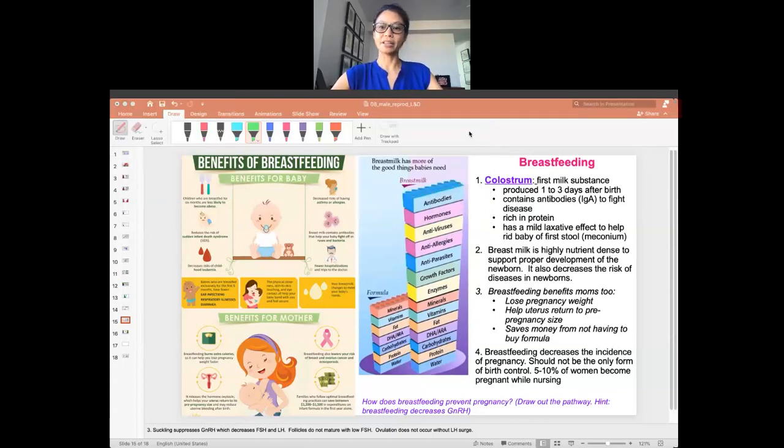Alright, so let's continue with the last of the female reproductive system. Part of the reason we're spending so much time on females is this whole pregnancy, which is nine months, and then labor and delivery. And then after labor and delivery, we have to nourish the baby.